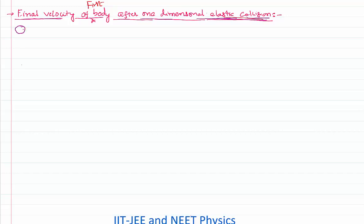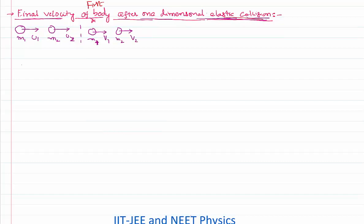Let's consider a scenario like this. A body of mass m1 moving with a velocity u1, and another body of mass m2 moving with a velocity u2. This is all before the collision. There is a collision because u1 is greater than u2, so the bodies change their velocities. Let the velocity of the first body after the collision be v1 and the second body be v2.